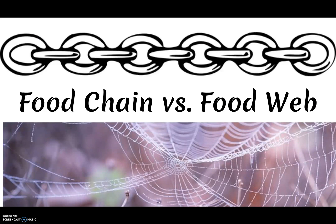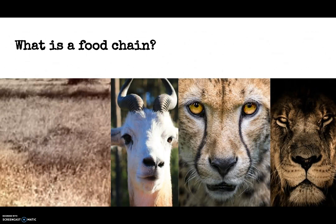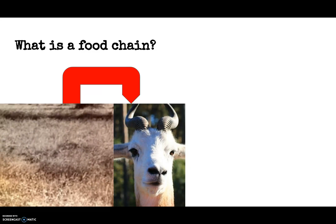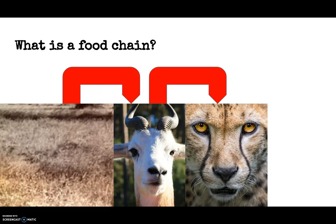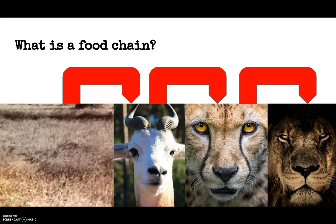You can represent this through food chains or through food webs — they're different, so I'm going to explain that. A food chain is a part of a food web, and it's where each animal depends on the other one for food. The gazelle depends on the grass for food, the cheetah depends on the gazelle for food, and the lion